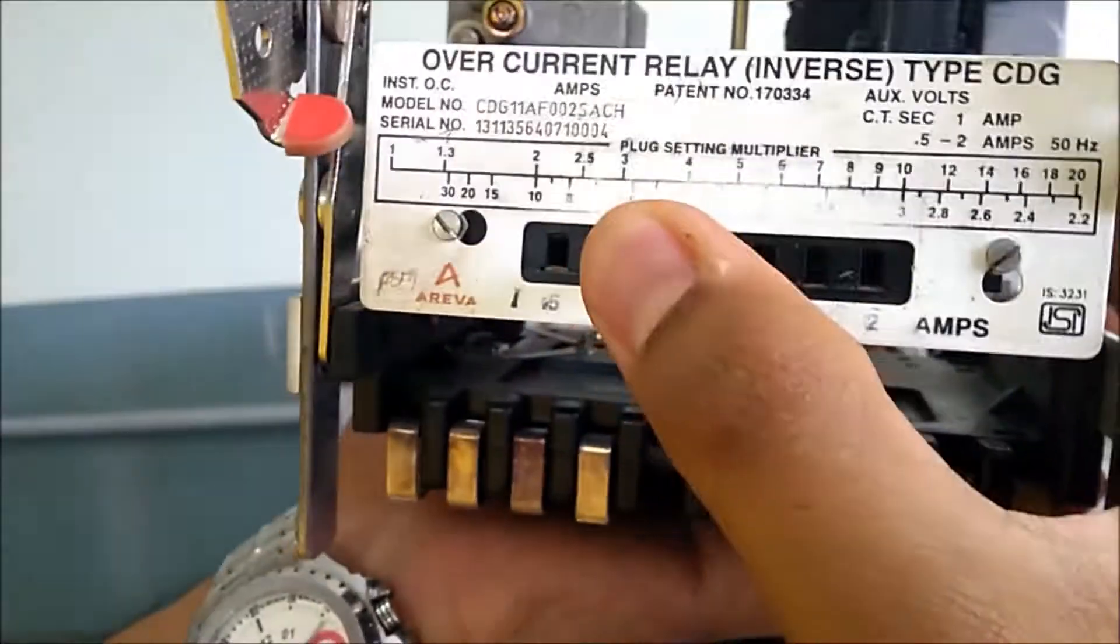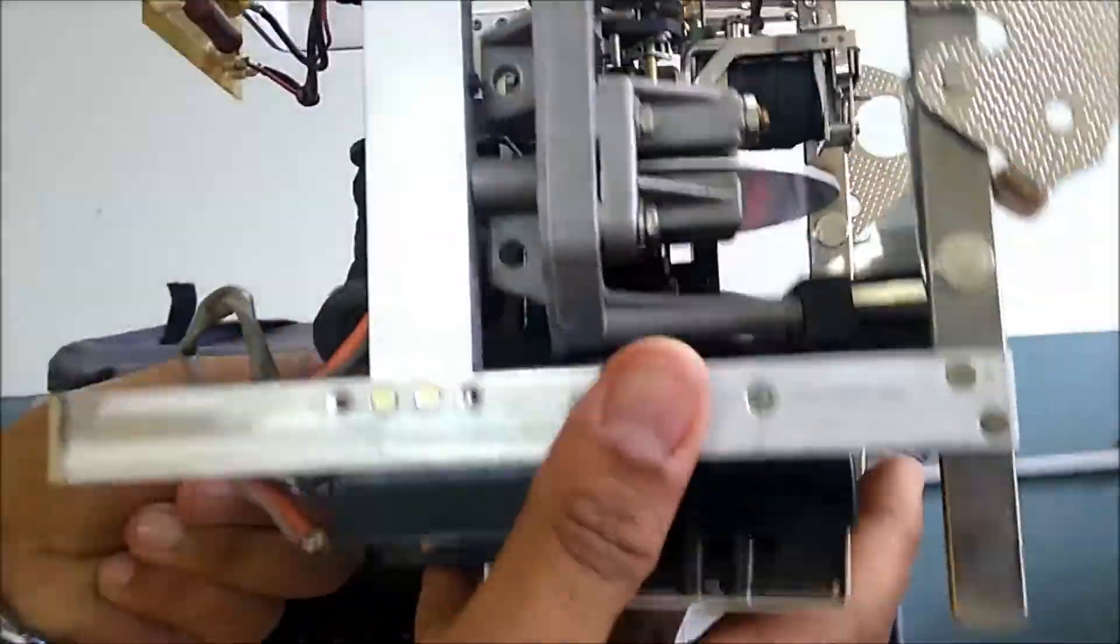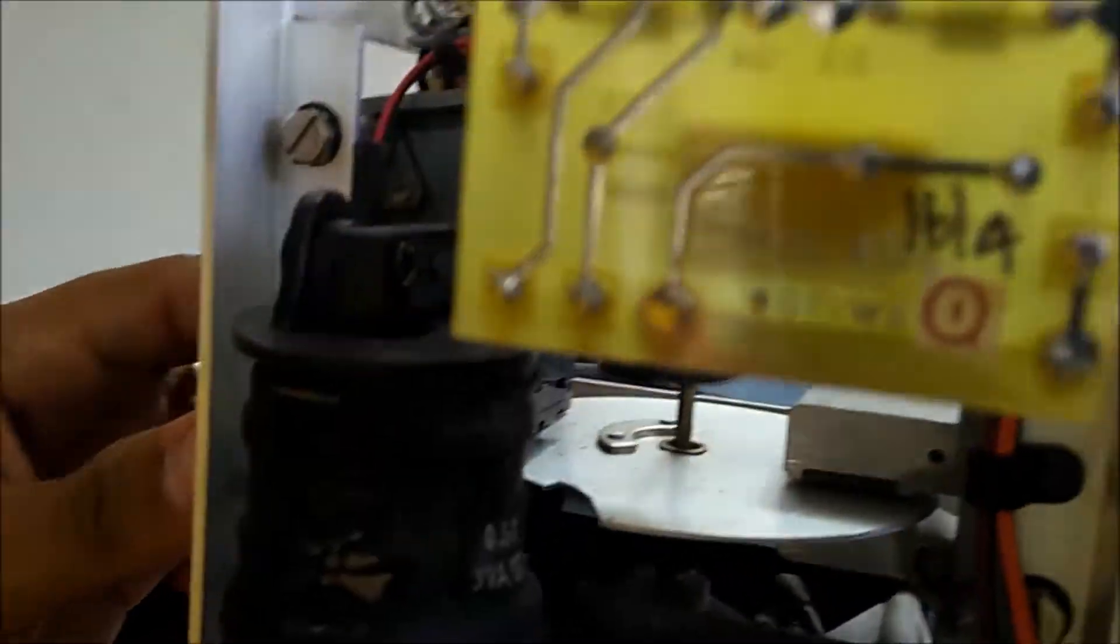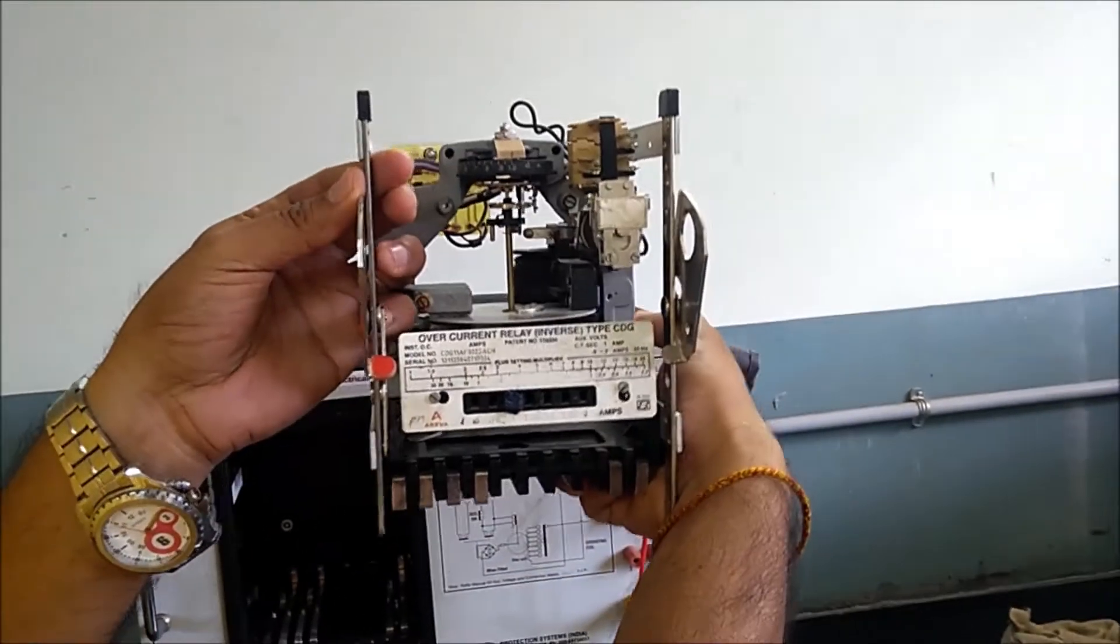Basically we connect this via current transformer to step down the actual load current. Here we can see the rotating disc, behind that we have this solenoid coil which is also called a control coil - there is a control circuit and this is basically a relay.